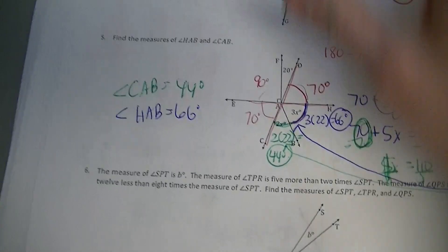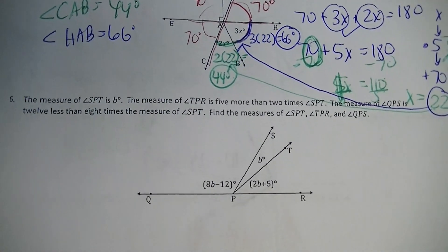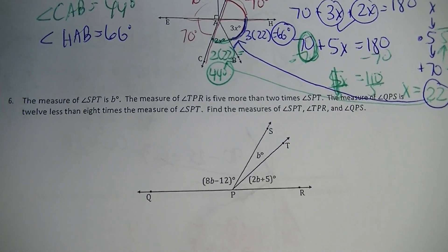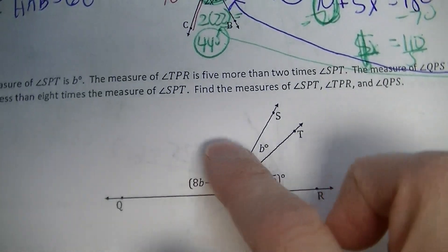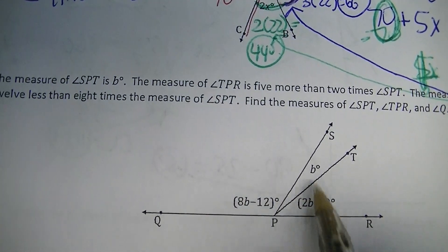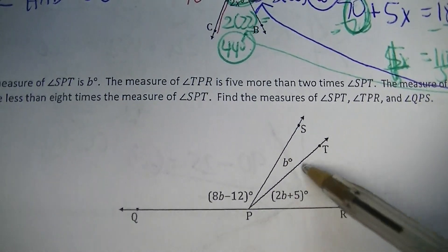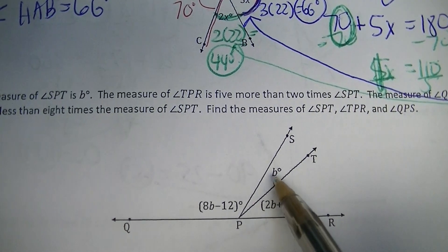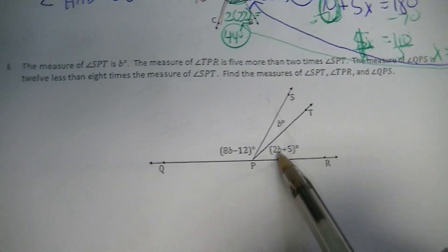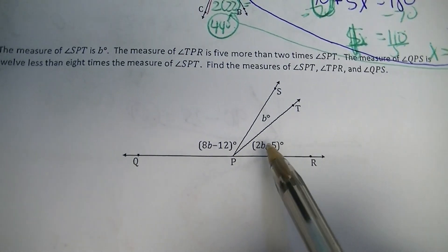Next problem. The measure of angle STP is B degrees. The measurement of angle TPR is 5 more than 2 times the measurement of angle SPT. The measure of angle QPS is 12 less than 8 times the measure of angle SPT. Find the measure of angles SPT, TPR, and QPS. Since SPT is B, TPR is 2B plus 5, and QPS is 8B minus 12. They've accurately represented it, and now we just have to find those angle measures.